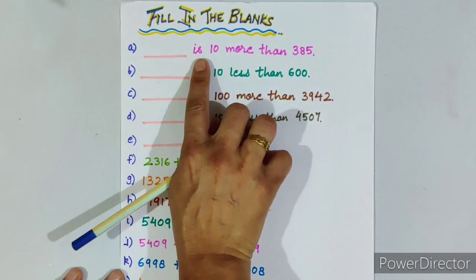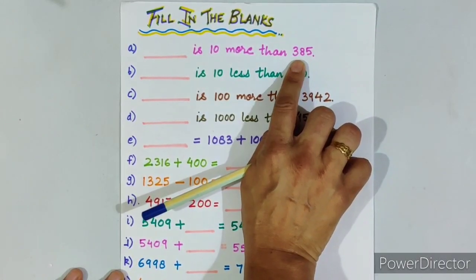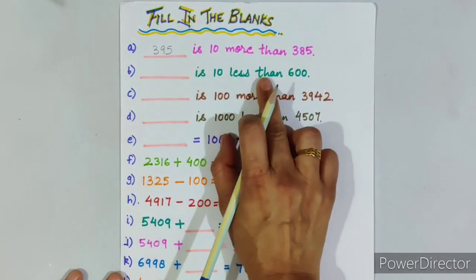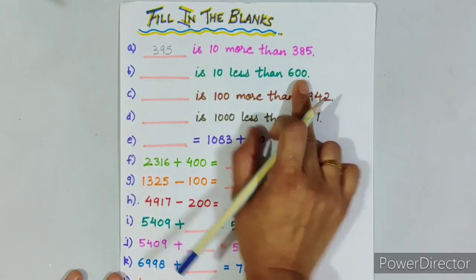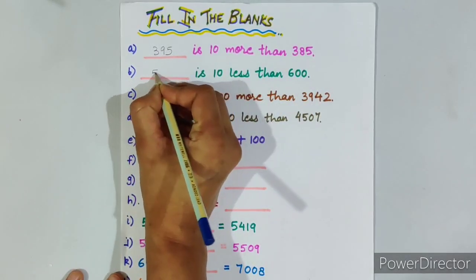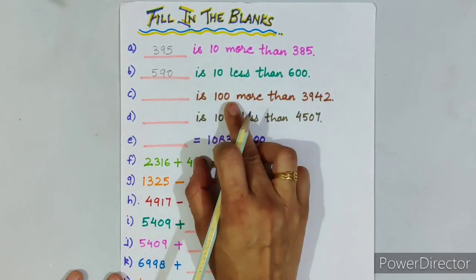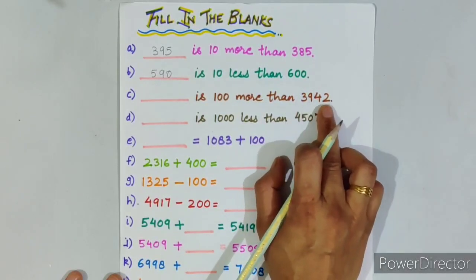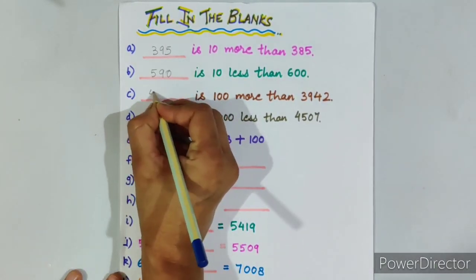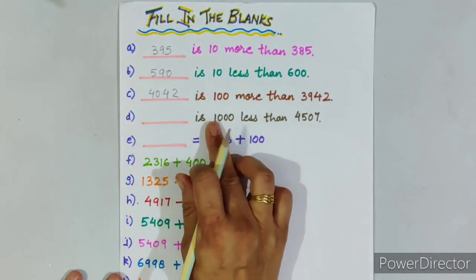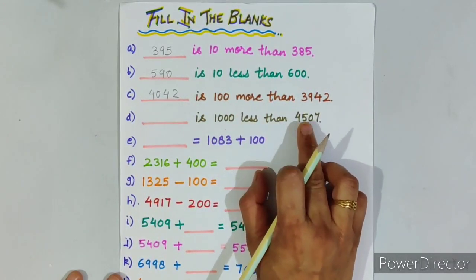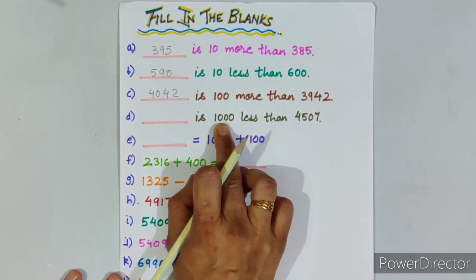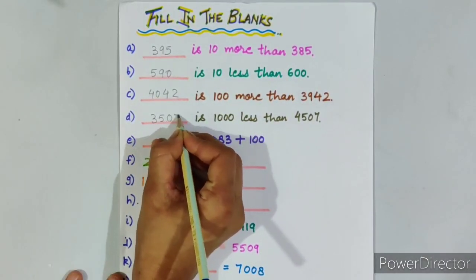Fill in the blanks. Dash is 10 more than 385 — we add 10 to 385, so the answer is 395. Dash is 10 less than 600 — we subtract 10 from 600, so the answer is 590. Dash is 100 more than 3,942 — we add 100, so the answer is 4,042. Dash is 1,000 less than 4,507 — we subtract 1,000, so the answer is 3,507.